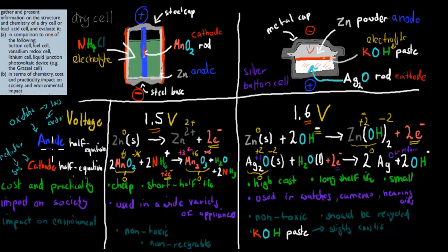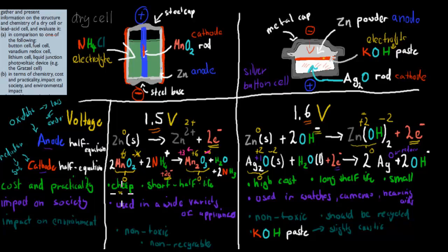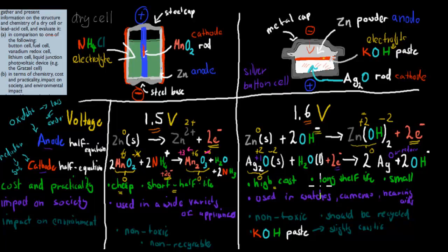For cost and practicality: dry cells (AAA batteries) are very cheap to produce, which is good, but they have a short shelf life because the ammonium chloride electrolyte attacks and breaks down the zinc. The silver button cell has a high cost because it contains silver, but it has a very long shelf life and lasts for a long time.